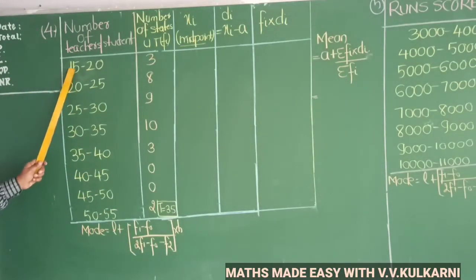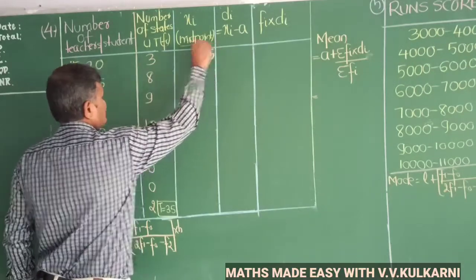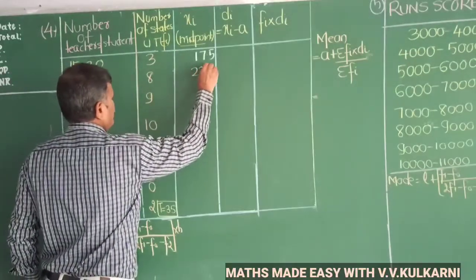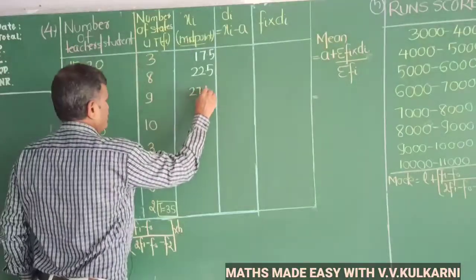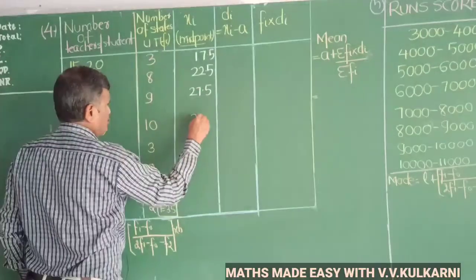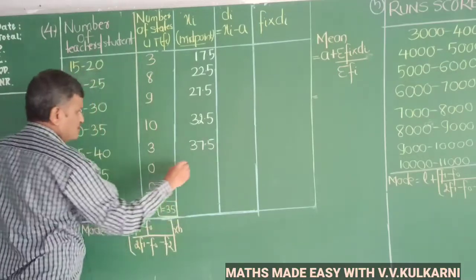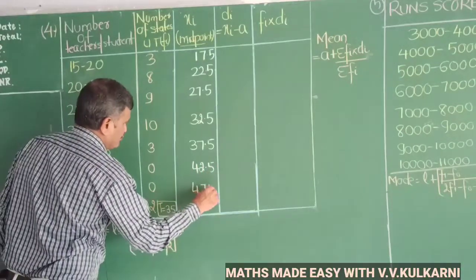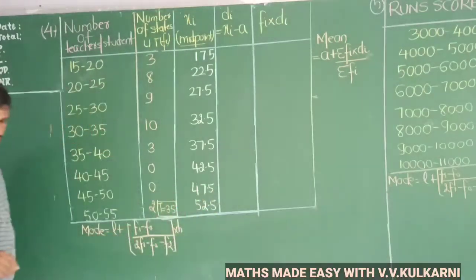First, find the midpoint for each class interval. For 15-20: 15 plus 20 is 35, divide by 2 gives 17.5. For 20-25: 20 plus 25 is 45, divide by 2 gives 22.5. Adding 5 each time, the subsequent midpoints become 27.5, 32.5, 37.5, 42.5, 47.5, and 52.5.